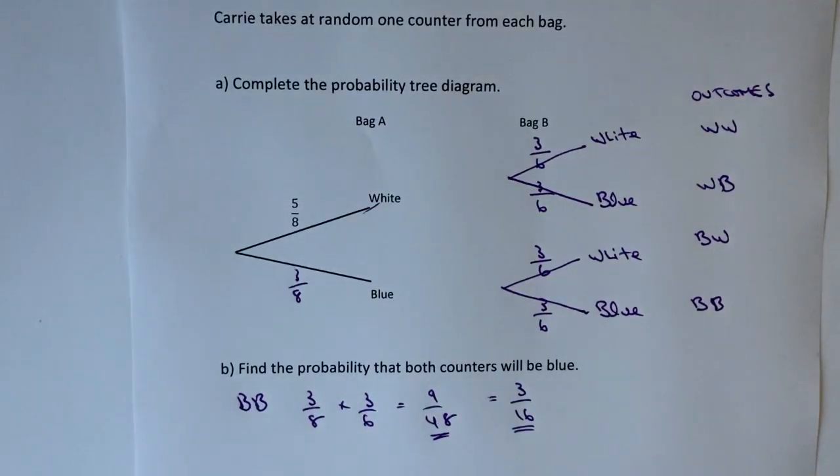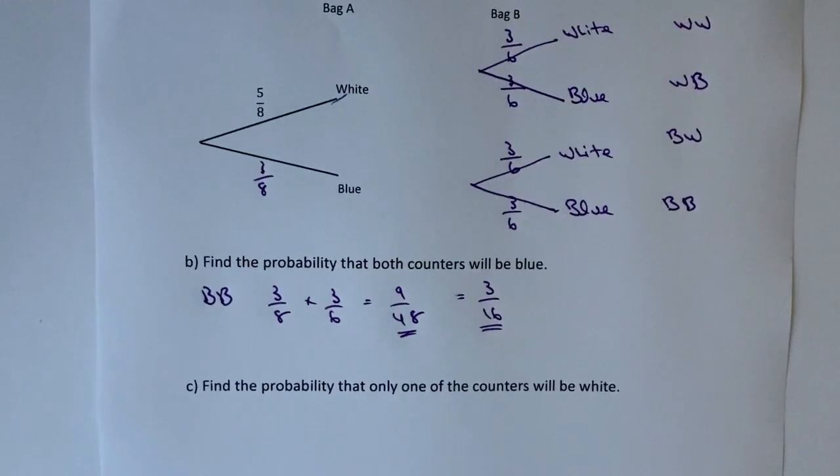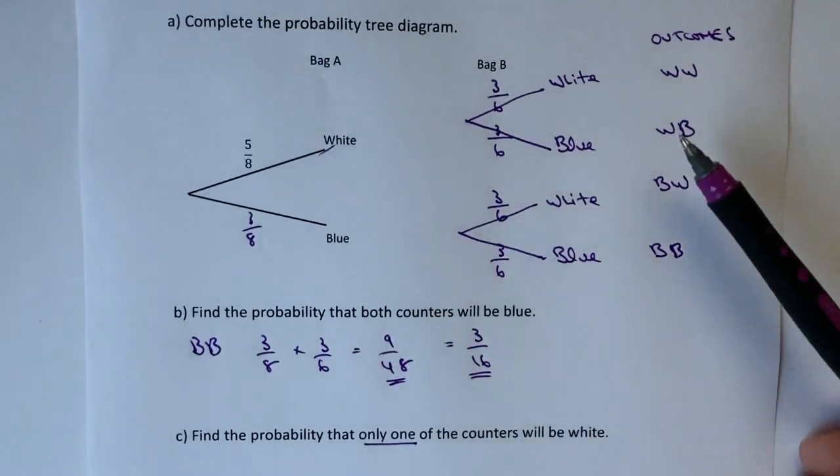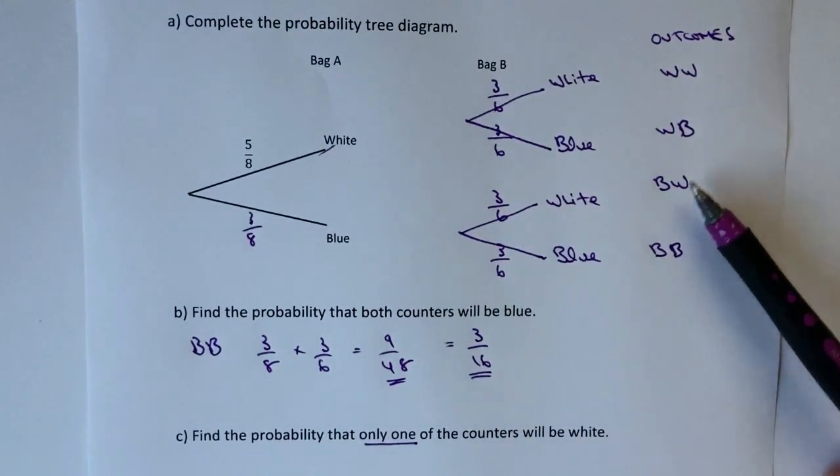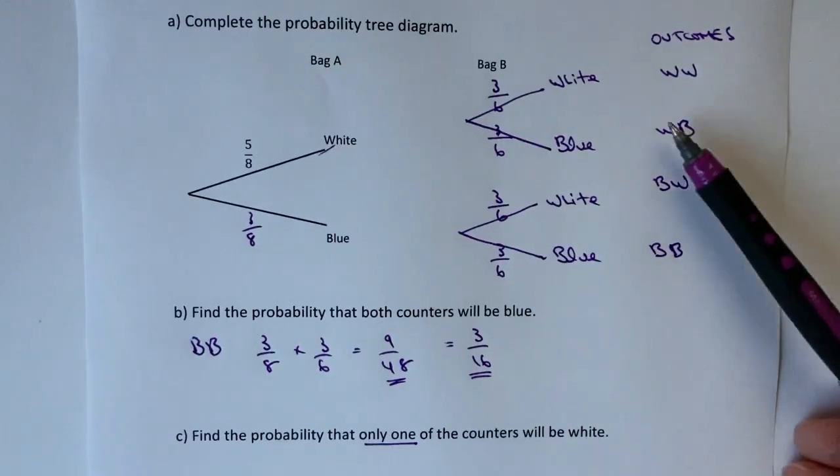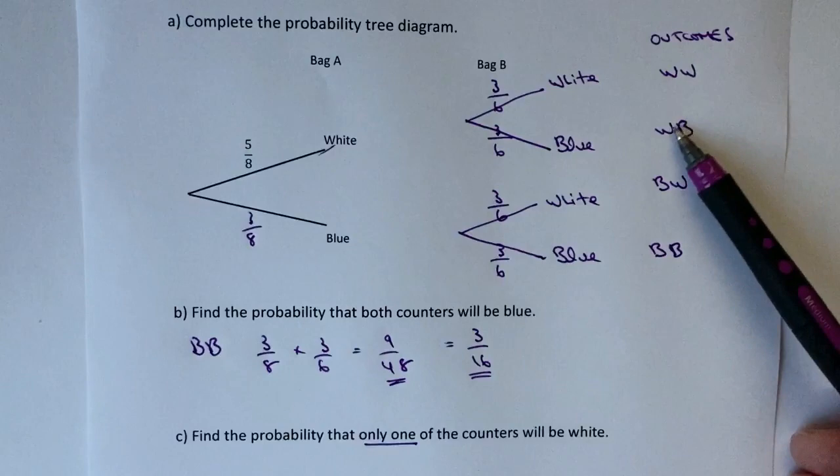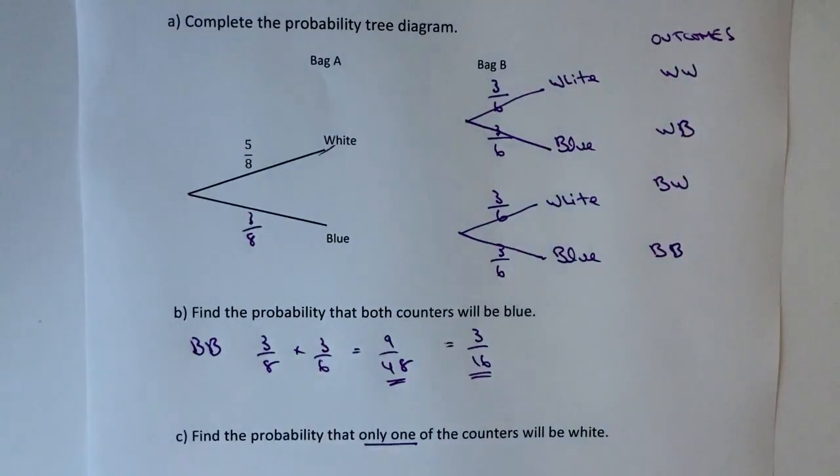The final part of this is find the probability that only one of the counters will be white. Only one - that's the important thing. What we're interested in then is going to be these two probabilities because this is white and blue and this is blue and white.